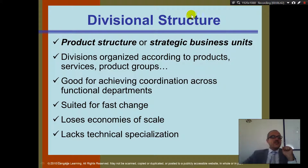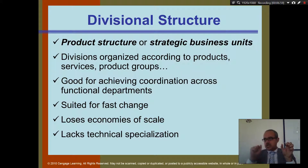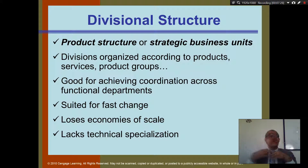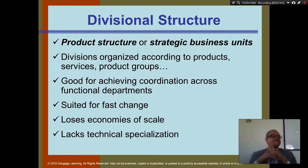The divisional structure groups by product structure or strategic business units. Instead of an accounting department or marketing department, they have a Product X department and a Product Y department — focused on what product they produce. For example, Procter and Gamble sells Tide, Ariel, and Pantene. Inside this company, they don't have one marketing department for all. They have a Pantene department, and under the Pantene department, they have their own marketing. So it's grouped by products.